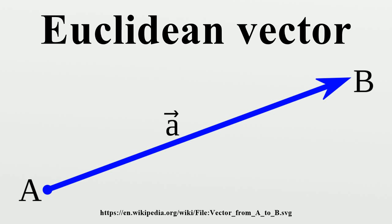History. The concept of vector, as we know it today, evolved gradually over a period of more than 200 years. About a dozen people made significant contributions. Giusto Bellavitis abstracted the basic idea in 1835 when he established the concept of equipollence. Working in a Euclidean plane, he made equipollent any pair of line segments of the same length and orientation. Essentially he realized an equivalence relation on the pairs of points in the plane and thus erected the first space of vectors in the plane.